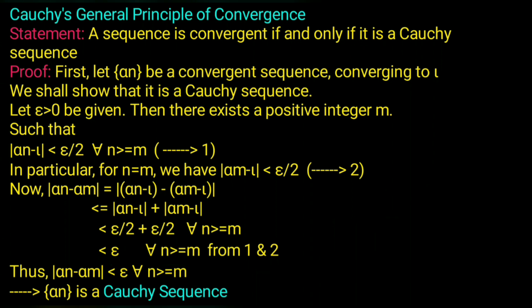For all n greater than or equal to m from equations 1 and 2. Thus, modulus an minus am is less than epsilon for all n greater than or equal to m. Therefore, an is a Cauchy sequence. This completes the forward direction.